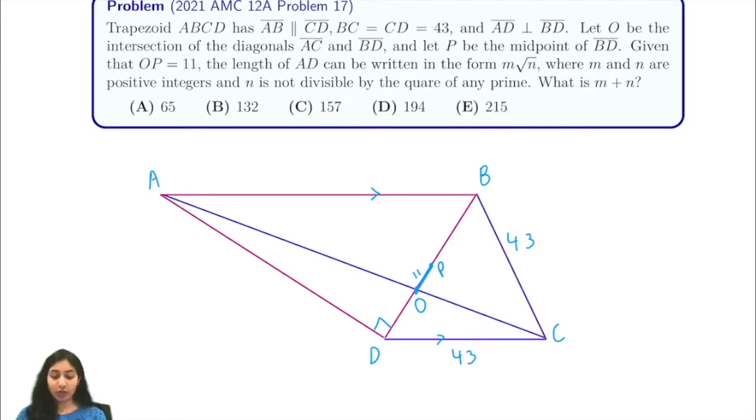So we start off by letting this angle be A. If this angle is A, we know that this angle must be 90 minus A, because it is a right triangle and the angles must sum to 180.